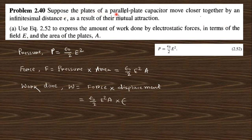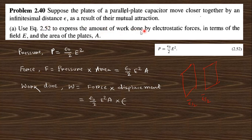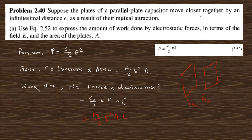Question 2.40 says: suppose the plates of a parallel plate capacitor move closer by an infinitesimal distance ε. Using equation 2.52, express the work done by the electrostatic force in terms of the electric field. The pressure from equation 2.52 is (ε₀/2)E². The force is pressure times area A, so F = (ε₀/2)E²A. The work done is force times displacement ε, giving W = (ε₀/2)E²Aε.